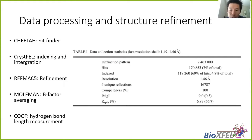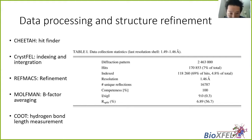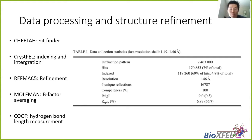Snapshots with hits were identified by Cheetah, and the indexing and integration were accomplished by CrystFEL. Other programs were used for structural refinement, B-factor calculation, and so on. The statistics of the experiments — such as resolution, percentage of hits, percentage of indexable hits, and R-split — are all shown in Table 1 of the paper.